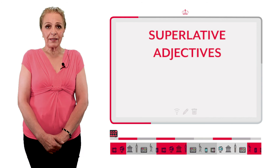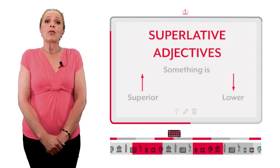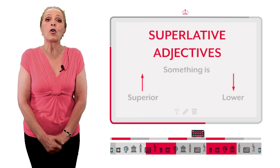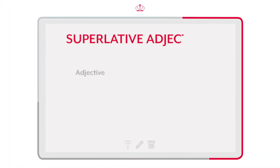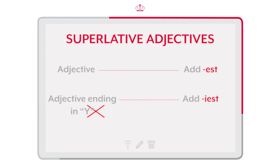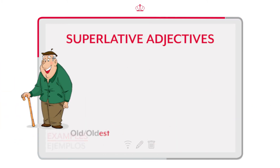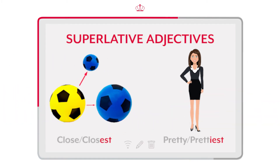There are also superlative adjectives, which we use when we want to say that something is superior or lower than another thing. Utilizamos los superlativos para indicar cuando algo es superior o más bajo que otra cosa. As in the comparative adjectives, we just have to add '-est'. And when the adjective ends in 'y', we drop the 'y' and add '-iest'. Así como en los comparativos, aquí también tenemos que agregar '-est'. Y si el adjetivo termina en 'y', quitamos la 'y' y agregamos '-iest'. Por ejemplo: old, oldest. Pretty, prettiest. Close, closest. Happy, happiest.